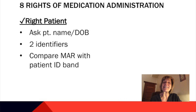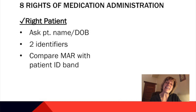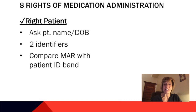The first right is the right patient. We want to always ask our patient their name and their date of birth — it takes two identifiers to identify the correct patient. We want to compare the medication record with the patient's ID bands. Remember that the room number is never an identifier for the correct patient.